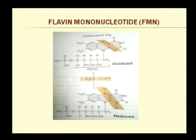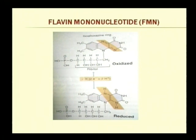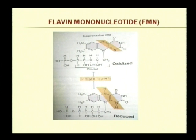In the electron transport chain, there are a number of carriers. In most cases these carriers are flavoproteins, iron-sulfur proteins, quinones, and cytochromes. The type of carriers differs across organisms, but the most commonly found carriers include flavoproteins — specifically FMN (Flavin mononucleotide) and FAD (Flavin adenine dinucleotide). In FAD and FMN the active site is the same; they are derived from a yellow prosthetic group.